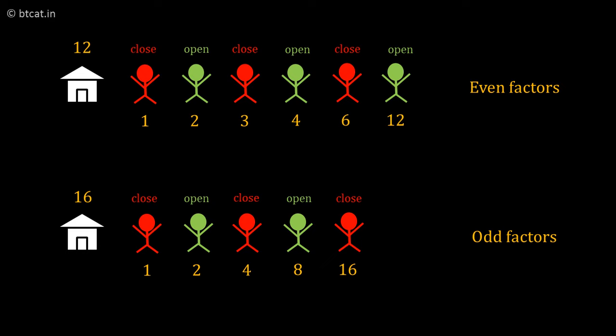If an odd number of people visit a room — meaning the operation is performed an odd number of times — the room will be closed. Combining both points: room numbers with an odd total number of factors will be closed, and rooms with an even total number of factors will be open.